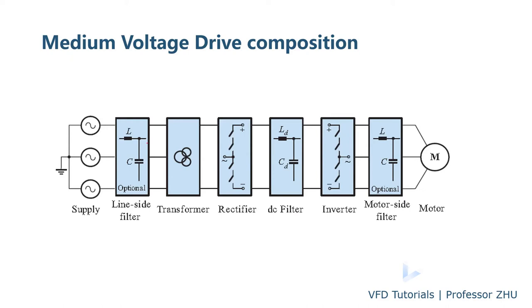This is a typical composition of a medium voltage drive. We have the rectifier, which converts AC to DC, and a DC filter using a capacitor or reactor. Then the inverter, DC to AC. And sometimes on the motor side you have a filter. Also, most of the medium voltage drive has a transformer on the input side. And sometimes you need a line-side filter. And here is the power supply.